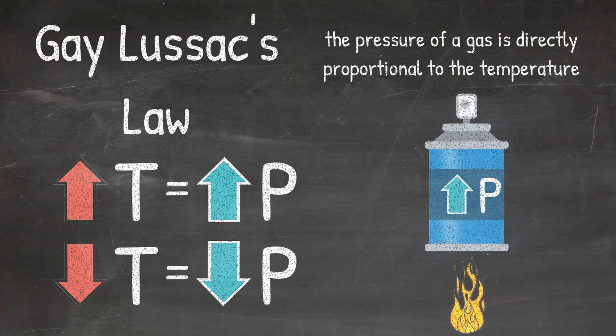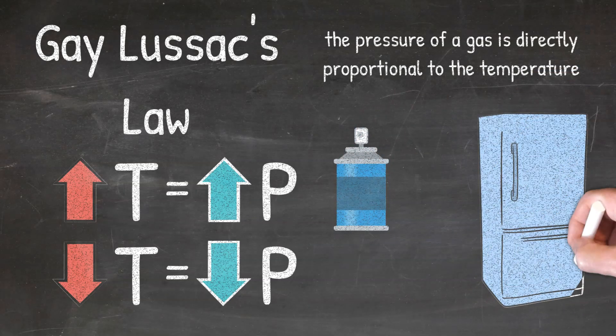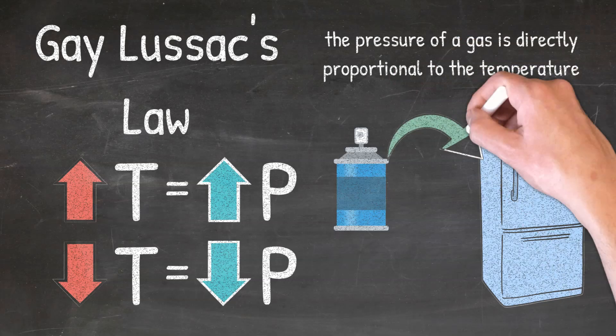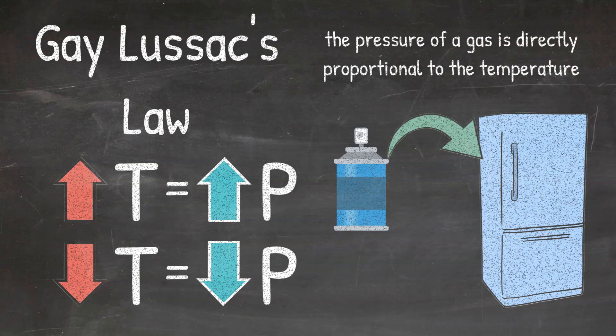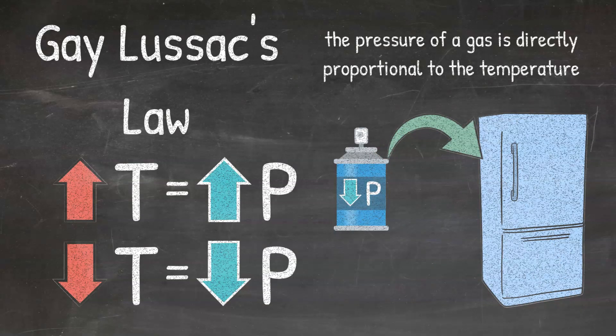Now, if you heat the can up long enough, the pressure of the gas inside is going to be so strong that the can is going to explode. So as the temperature of a gas increases, so does the pressure of that gas in a rigid container. Now, if you would take that can and place it in a freezer, then the opposite is going to happen. Because you are decreasing the temperature of the gas, the pressure of the gas in the can is also going to decrease as well.